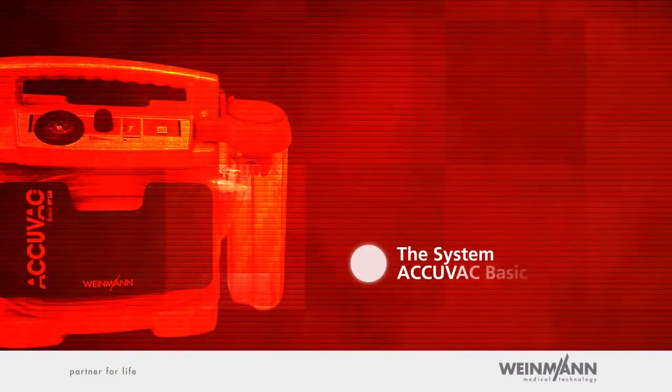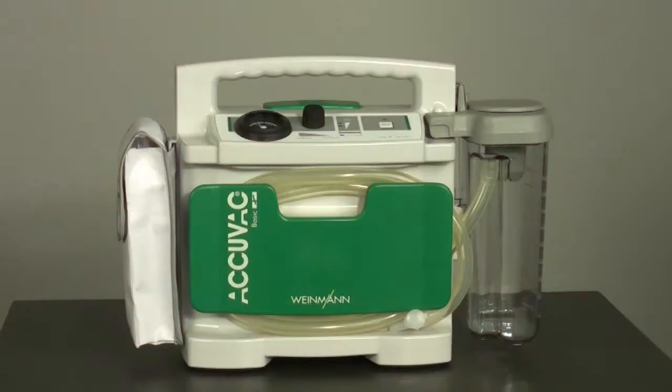The system ACUVAC BASIC consists of the following components: one, motor unit including handle, tube holder plate and operating panel; two, collection canister including tubing, shown here as a reusable component; and three, the accessories bag.